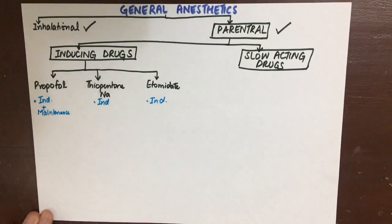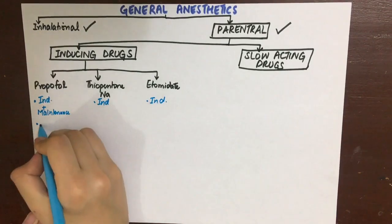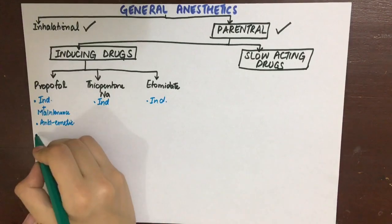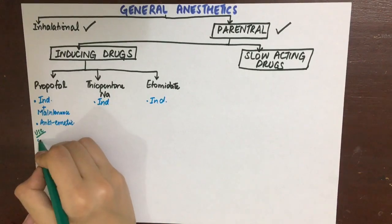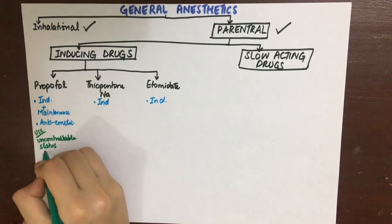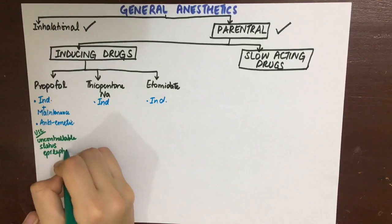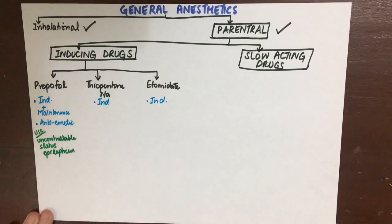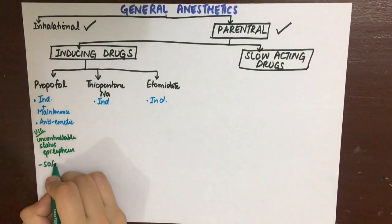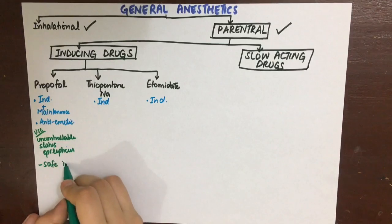Propofol has an antiemetic action, which is beneficial for surgery because nausea and vomiting could cause aspiration pneumonia. It also finds use in uncontrollable status epilepticus, and it is safe in pregnancy and asthmatics.